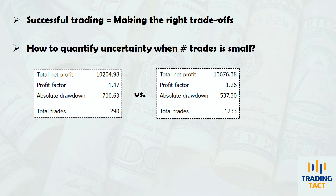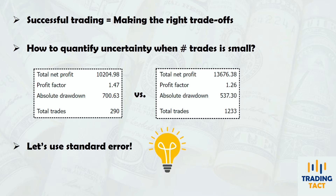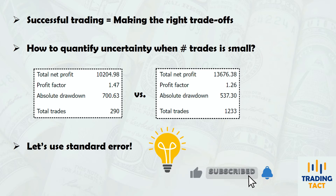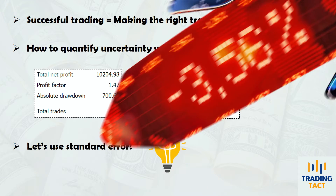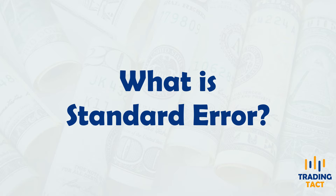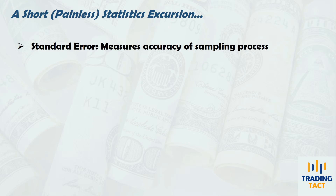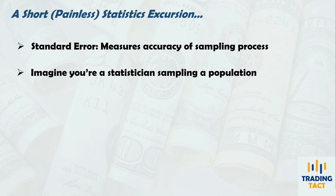Fortunately, we can borrow a concept from statistics called standard error. I'll explain what standard error is, then demonstrate its application using two very different backtests. Standard error measures the accuracy of your sampling process. A trader backtesting a strategy is like a statistician sampling a population to determine some underlying value. To better understand what standard error means, let's first discuss how it is used in statistics.